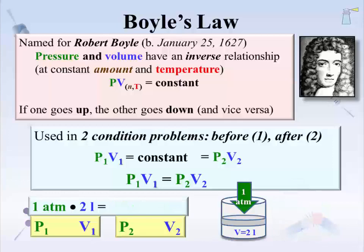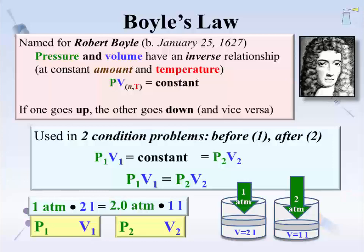What direction would the pressure need to go for that starting volume of 2 liters to decrease to 1 liter? Boyle's law would argue for an increase in pressure — 2 atm in this case. This is how Boyle's law is applied.